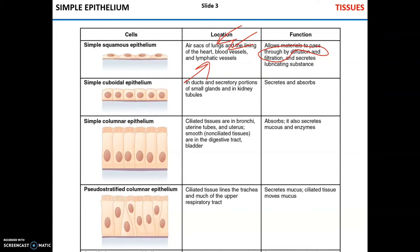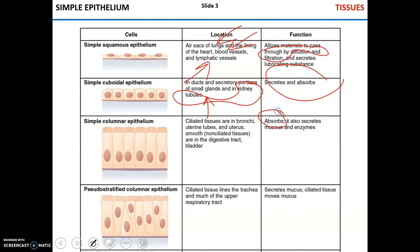Simple cuboidal epithelium is responsible for secretion and absorption and can be found in places where secretion and absorption are particularly intense, like glands — for example, the thyroid gland — and kidney tubules, which absorb and secrete substances from and into the urine. Simple columnar epithelium mostly absorbs. It also can produce mucus and certain enzymes, particularly in the digestive system. It can be found in the digestive tract, the bladder, and the bronchi. In bronchi and uterine tubes, columnar epithelium carries cilia, which either move mucus or, in the fallopian or uterine tubes, they move oocytes.